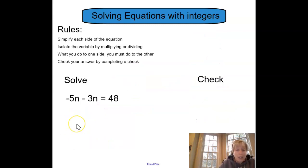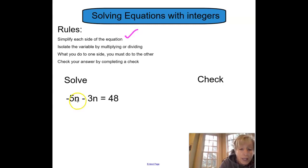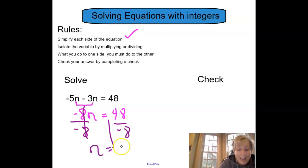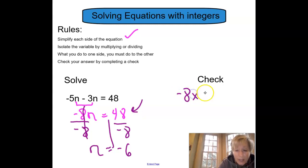Now here's a problem that has an extra step. If we remember our rules, we always need to simplify the expression. So over here on the left side, I can combine like terms: negative 5n minus 3n gives me negative 8n equals 48. It's a multiplication problem, so I'm going to divide. I'm going to divide the left by negative 8, which means I divide the right by negative 8. Negative 8 divided by negative 8 leaves me just with n. 48 divided by negative 8 is negative 6. Now I need to do my check — I can use the simplified expression. Negative 8 times negative 6 should equal positive 48.